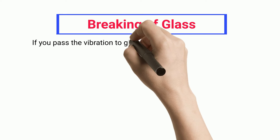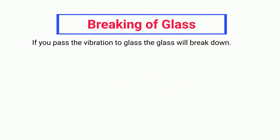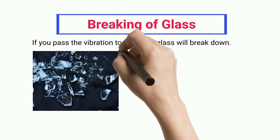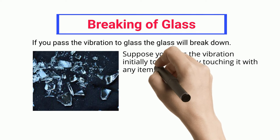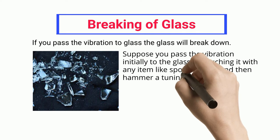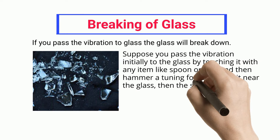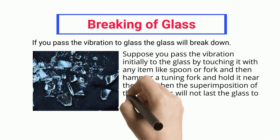Breaking of glass: If you pass the vibration to glass, the glass will break down. Suppose you pass the vibration initially to the glass by touching it with any item like a spoon or fork, and then hammer a tuning fork and hold it near the glass. Then the superimposition of the two waves will not last the glass to stand.